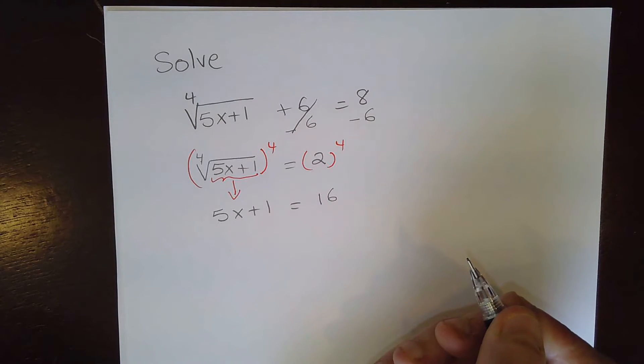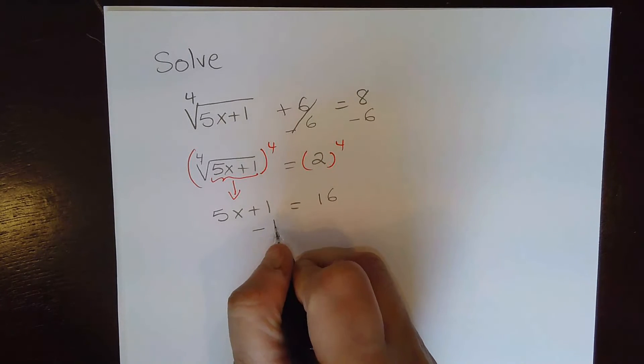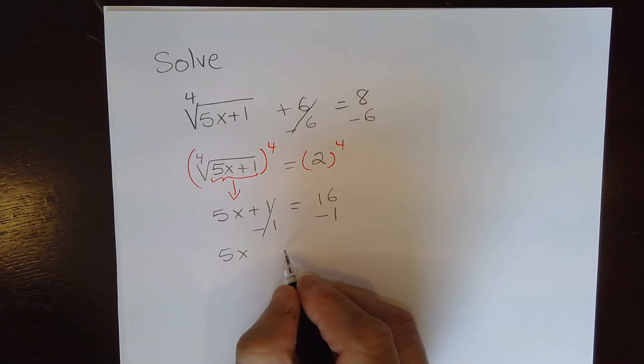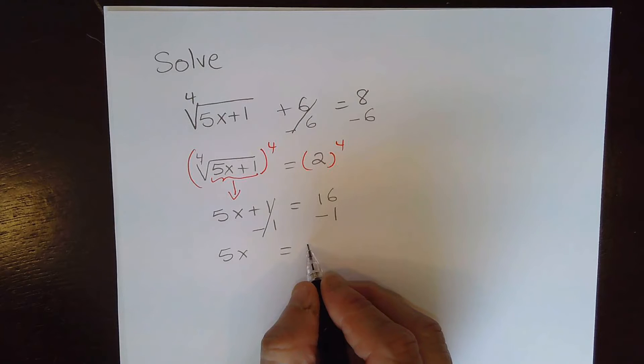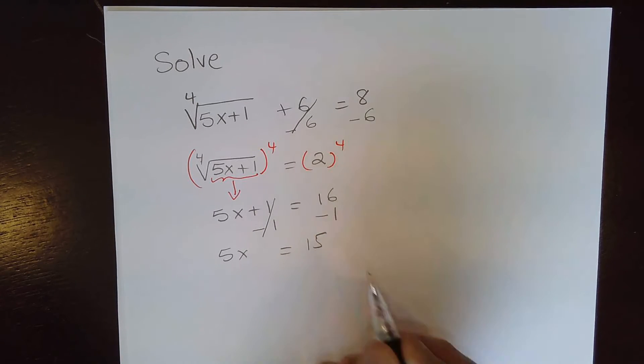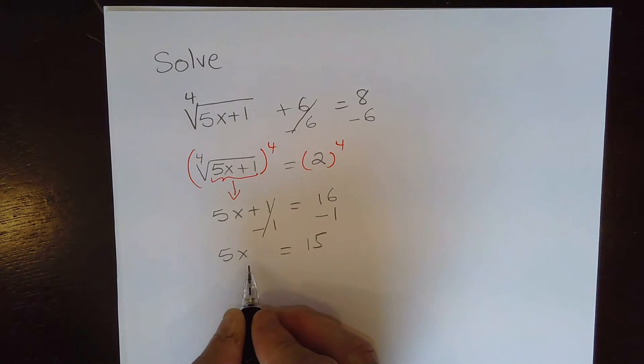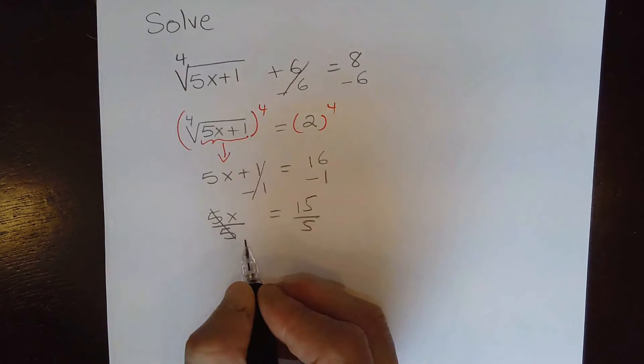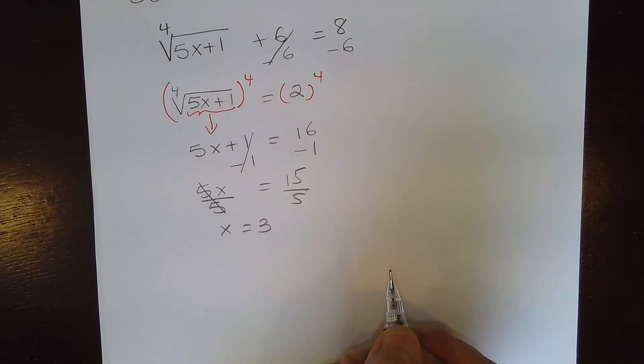Now solving for x, we subtract 1 on both sides of the equation. We get 5x equal to 16 minus 1 which is 15. And solving for x, we divide both sides of the equation by 5. And then x would be equal to 3. That is our solution.